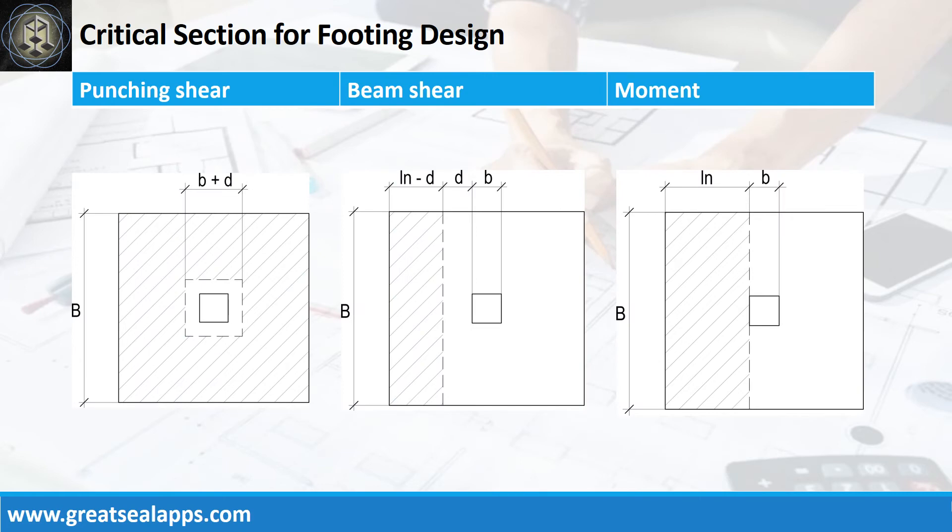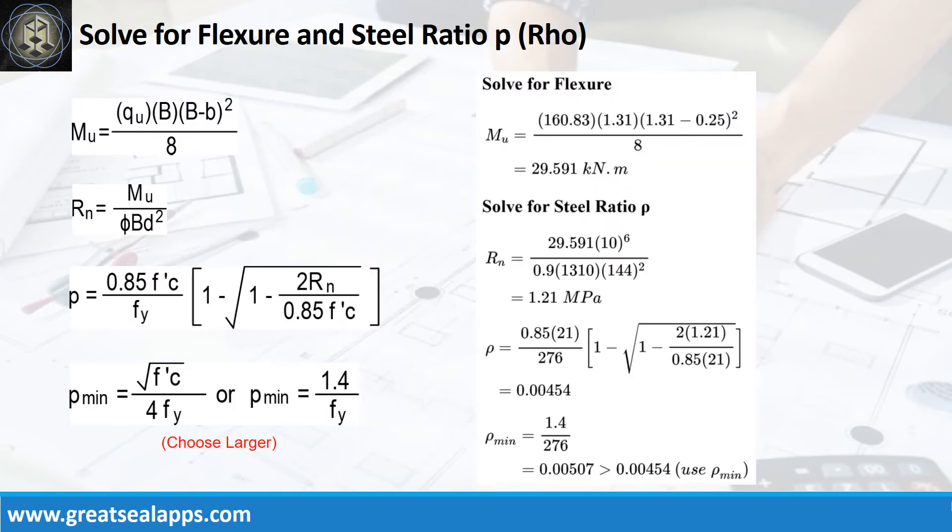Critical section diagrams for punching shear, beam shear, and moment evaluation. Given ultimate soil pressure equals 160.83 kPa, footing width equals 1.31 m and column side equals 250 mm, the maximum moment is 29.591 kN·m.